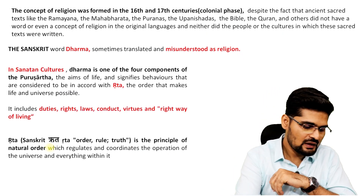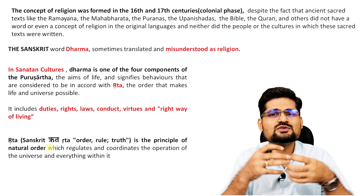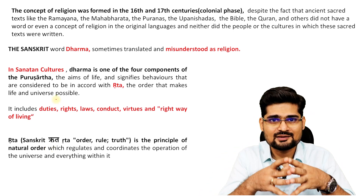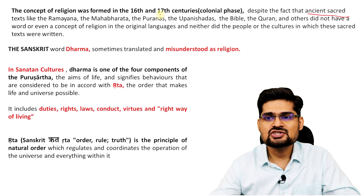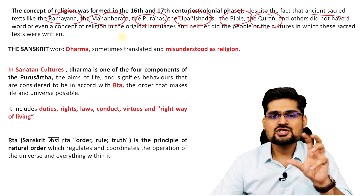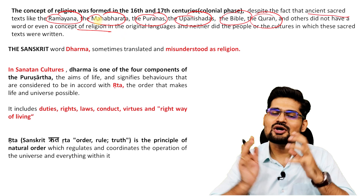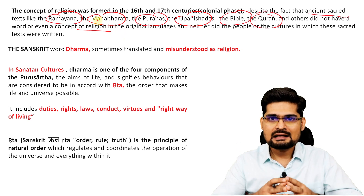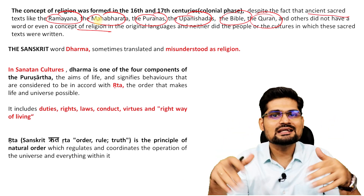The concept of religion is not very old. This religion concept was formed just in the 16th and 17th centuries when colonialism was dominating the world. Despite the fact that ancient sacred texts like Ramayana, Mahabharata, Puran, Upanishad, Bible, and Quran exist — the word religion itself is never found in them. This concept of religion is not in the originality; it is a construction of colonialism which spread this word across cultures.